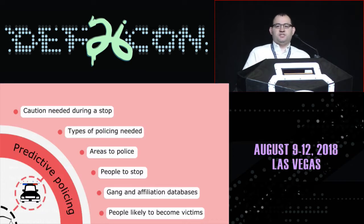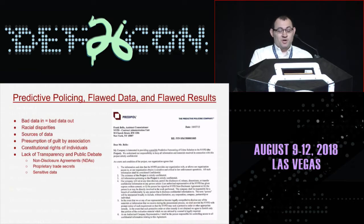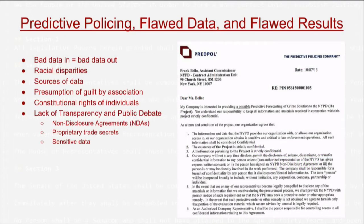Starting with predictive policing: predictive policing is basically using data and algorithms to make decisions that were traditionally left up to human law enforcement officers. In theory that sounds great — you can remove the bias from the system — except in reality that's not actually how it works. Because if you've trained the algorithm based upon data from years and decades worth of racist policing, you're going to end up with a racist output.